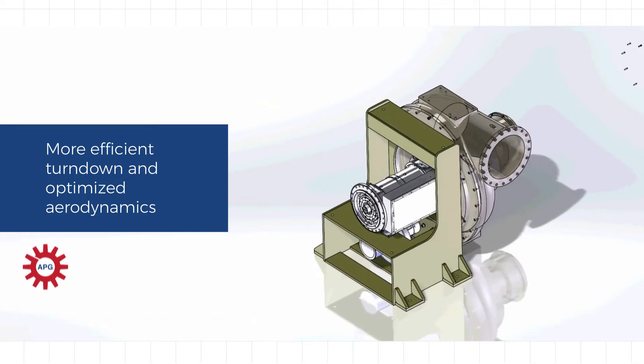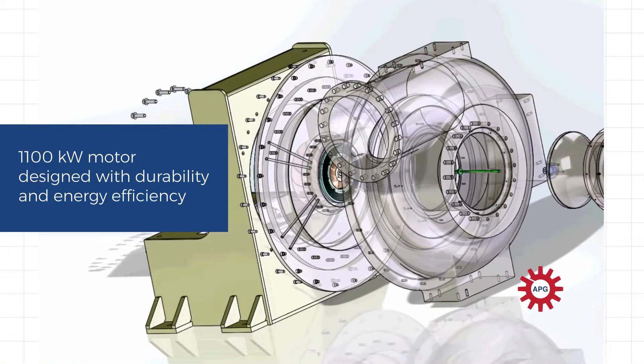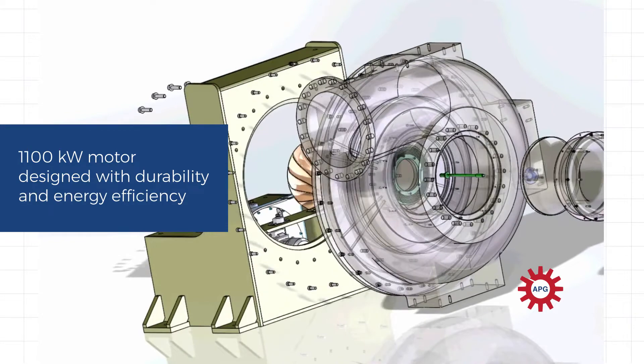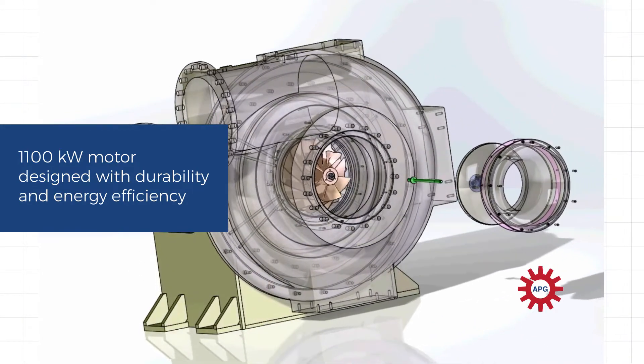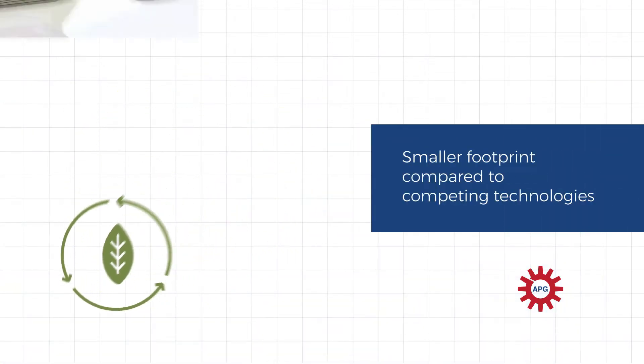Despite its impressive output, the 1-megawatt Turbo Blower's powerful 1,100-kilowatt motor is specifically designed with durability and energy efficiency in mind, and boasts a smaller footprint compared to competing technologies.